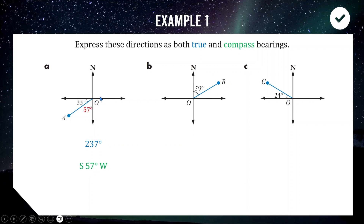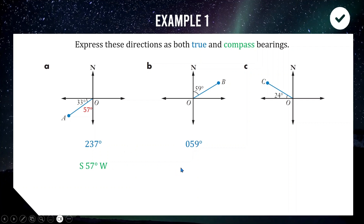For point B it's straightforward — just point north and rotate 59 degrees clockwise. True bearings must always be written in three digits, so it's 059 degrees. For the compass bearing, we're starting from north and rotating 59 degrees towards east, so it's North 59 degrees East. Compass bearings always start with north or south and finish with east or west.